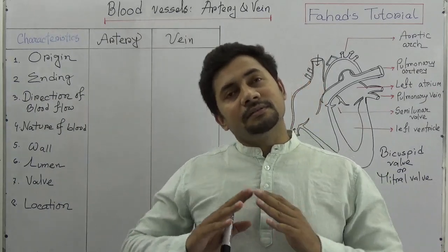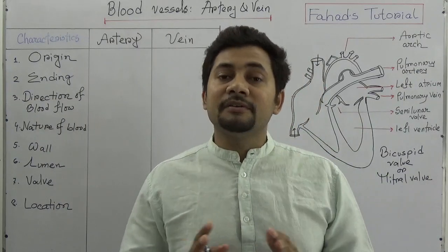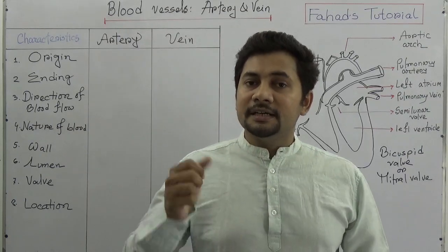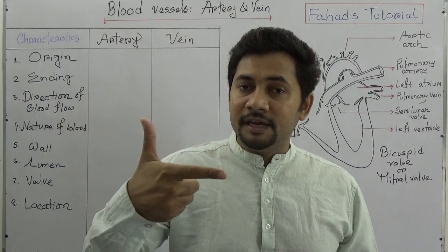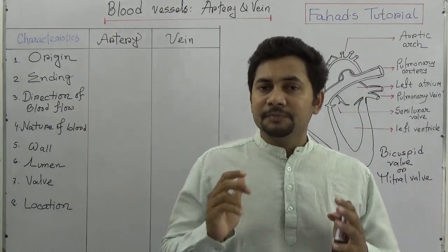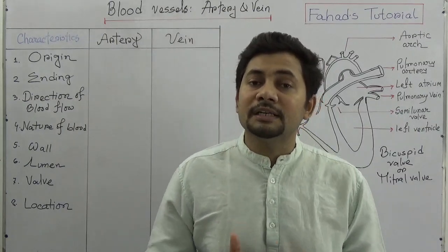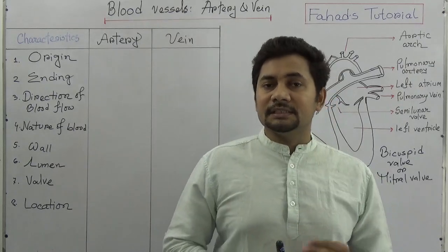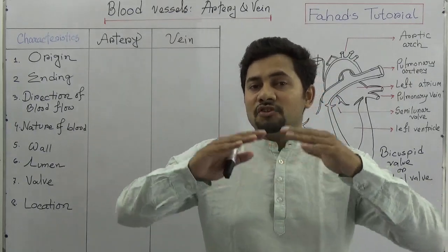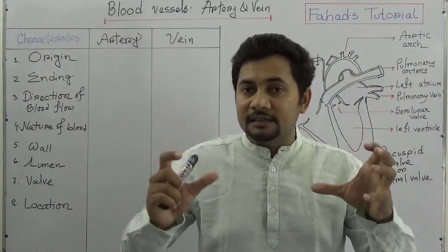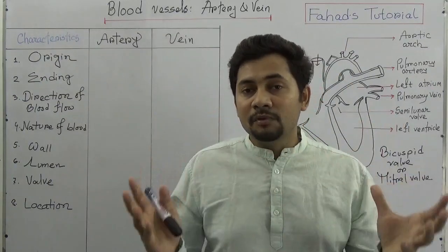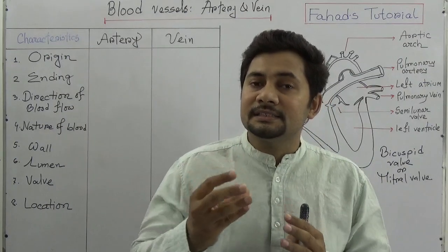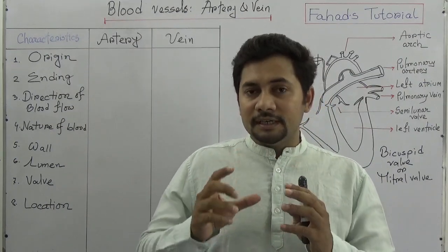Based on size, shape, and function, blood vessels are of three types: arteries, veins, and capillaries. So the first question is: what is a blood vessel? The answer is that it is a channel through which blood moves inside our body.